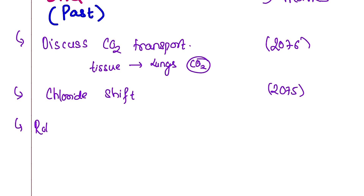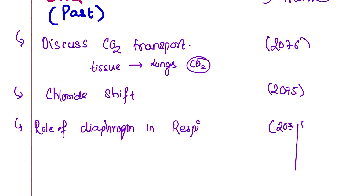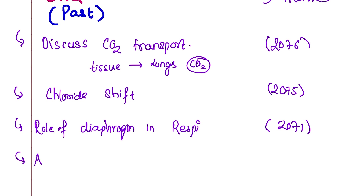The role of the diaphragm in respiration — in respiration, the diaphragm appeared in 2071. The diaphragm is dome-shaped. During inspiration, it flattens. This increases intra-thoracic volume. The pressure decreases and air enters — you can describe it like this.